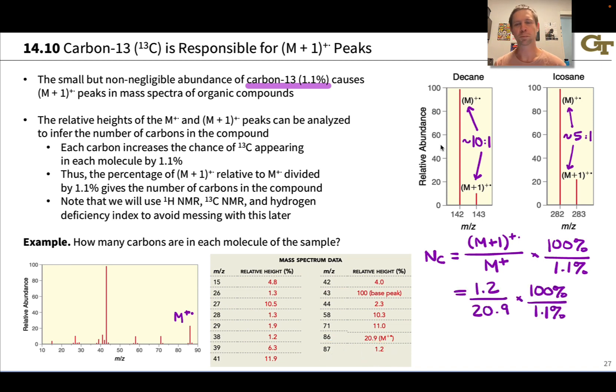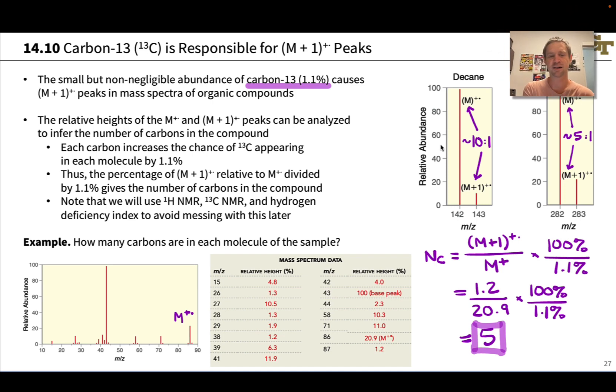So the ratio of those is 1.2 to 20.9 times 100% divided by 1.1, and this comes out to about 5 carbons. This is not an exact science because the relative heights are not super precise, but if we round, the closest whole number is 5, and this is our best guess as to the number of carbons in this compound.